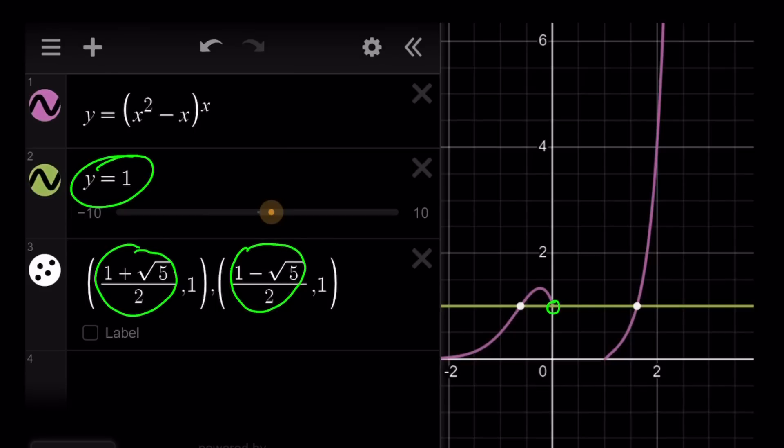And notice that between 0 and 1, our function is not well defined because exponential function does not like negative base. So when x squared minus x is negative, which means x is between 0 and 1, then we run into problems in the real world. And this brings us to the end of this video.